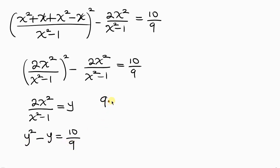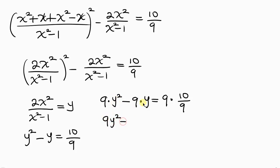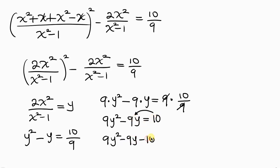Let's clear the fraction by multiplying through by 9: 9y² - 9y = 10. Moving 10 to the left-hand side gives us the quadratic equation 9y² - 9y - 10 = 0.